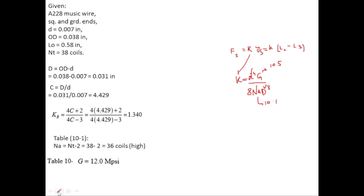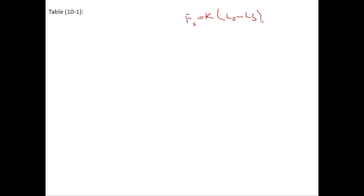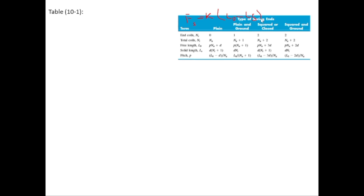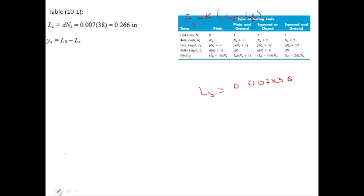Putting the values into the formula for K: K = (0.007)⁴ × 12 Mpsi / (8 × 28 × (0.031)³), which gives K = 3.358 lbf/in. For FS = K × (L0 − LS), we need LS. From table 10.1, for a squared-and-ground spring, LS = d × NT = 0.007 × 30 = 0.266 inches.